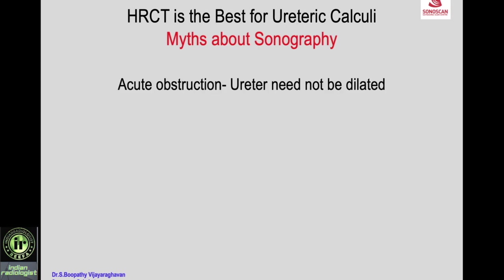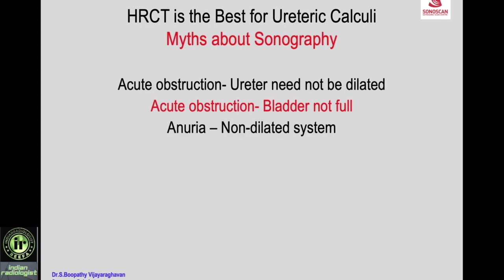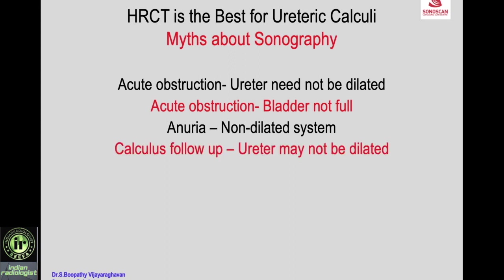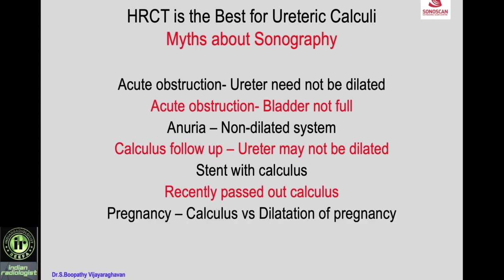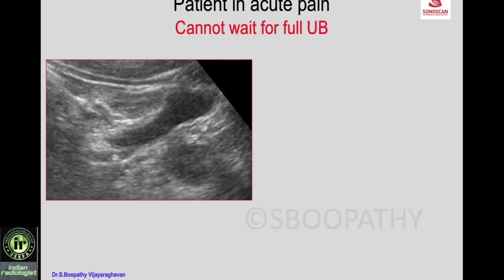More myths: in acute obstruction the ureter need not be dilated; with acute obstruction the bladder will not be full; and in anuria due to bilateral calculus, the collecting system may not be dilated. In follow-up of a calculus, the ureter may not be dilated, so your calculus may not be seen. There may be a calculus along with a stent, or a recently passed-out calculus with a dilated collecting system which may be misleading. In pregnancy, dilatation of the collecting system due to the gravid uterus must be differentiated from calculus when the patient presents with pain.